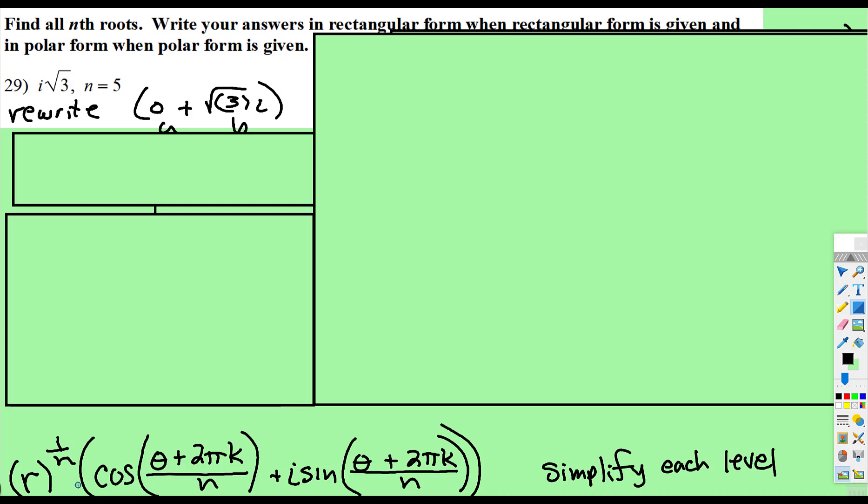And here's the theorem mathematically written below. If you have all of this to 1 over n, then you're going to write it as r to the 1 over n times cosine of theta plus 2πk all over n plus i sine of theta plus 2πk all over n.